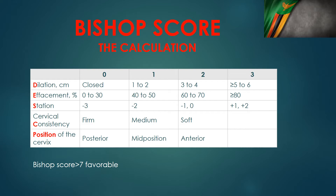The parameters are dilatation, effacement, station, consistency of the cervix, and position of the cervix. Effacement is measured in percentages — percent effacement. When we say the Bishop score is favorable, we mean that if labor was induced, the success rate is very similar to if labor had started spontaneously.